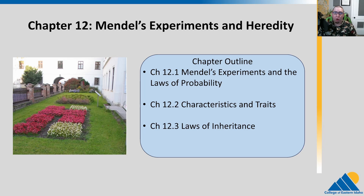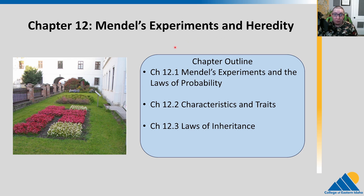In chapter 12, we're going to talk about the early stages of genetics. To do that, we're going to need to talk about Gregor Mendel and his experiments in what we call heredity, which is the science of how things get passed on. That is going to lead us to some early experiments, but also to talk about the mathematics behind this — basic laws of probability.